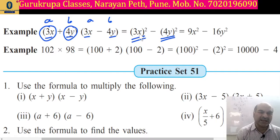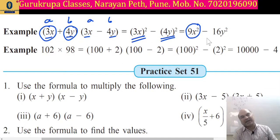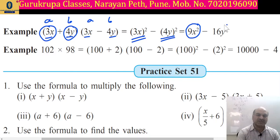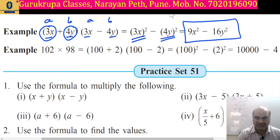3 square is 9 and x square is x square, so we get 9x square. Square of 4 is 16 and square of y is y square, so we get 16y square. Therefore the final answer we get here is 9x square minus 16y square.